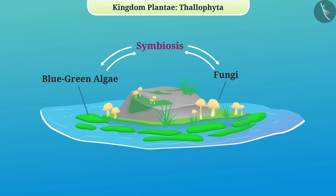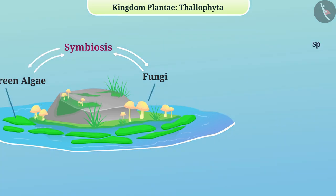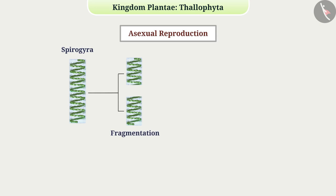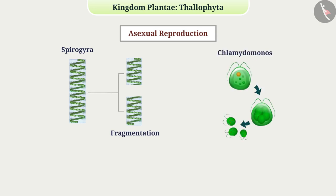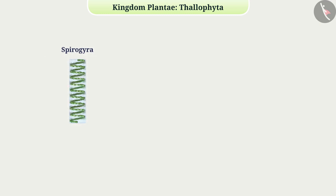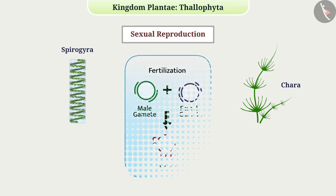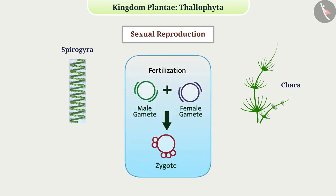Thalophytes have various methods of reproduction. In Spirogyra, asexual reproduction occurs by fragmentation. The asexual reproduction in Chlamydomonas results from the origin of various spores called zoospores. In Spirogyra, Chara, and others, sexual reproduction occurs by fertilization of gametes.